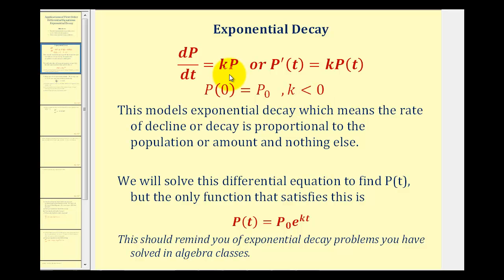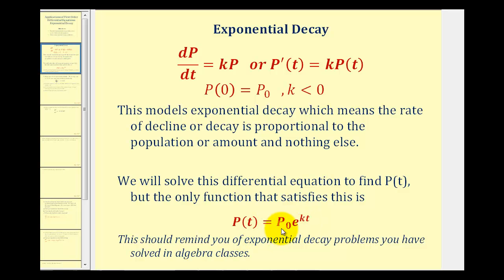We'll actually solve this differential equation in the first example to find our function p of t, but the only solution to this is the exponential function p of t equals p sub zero times e raised to the power of kt, where p sub zero is the initial amount, k is the exponential decay rate, t is the time, and p of t is the amount after time t. This function should remind you of exponential decay problems from a previous algebra class.